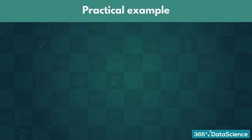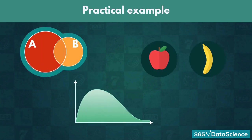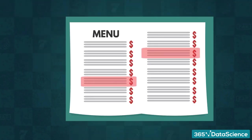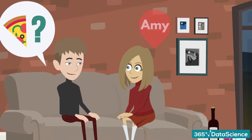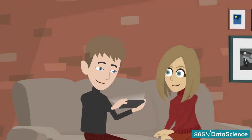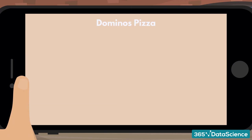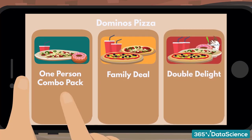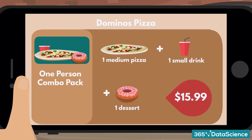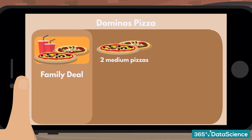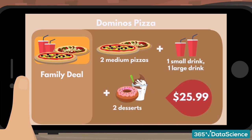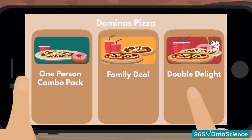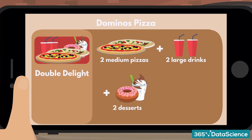This video is going to be a practical example where we showcase and apply most of the knowledge gained in this section. We are going to use our newly acquired understanding of combinatorics to aid us in ordering something nobody has ordered before. So you and your friend Amy want to get some Domino's pizza for your night in. The store offers several deals: a one-person combo pack, a family deal, and double delight. The first consists of a medium pizza, a small drink, and a dessert for $15.99. The family deal includes two medium-sized pizzas, a small drink, a large drink, and two desserts for $25.99. Lastly, double delight also includes two pizzas, two drinks (both large), and two desserts for $27.99.